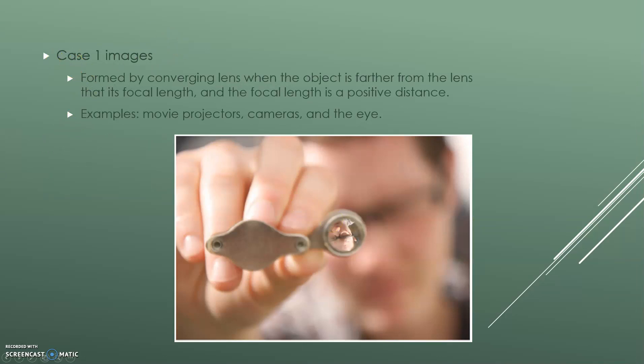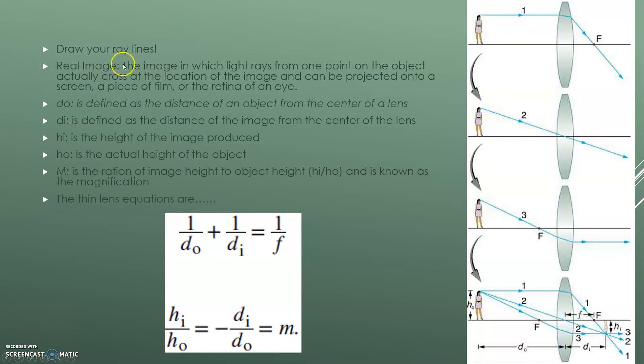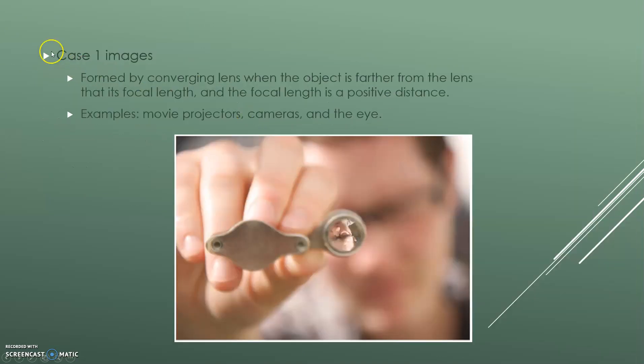So we went over case one images before and this comes from, this has to do with real images. So they're formed by converging lenses when the object is farther from the lens than its focal length. And the focal length is a positive distance. So movie projectors, cameras, and the eye. And you can see here, this guy is actually holding up a converging lens as you can see. And the object is farther from the lens than its focal length. And you can't really tell where the focal length is, but this is a good example of a case one image.